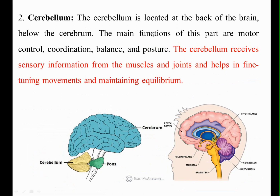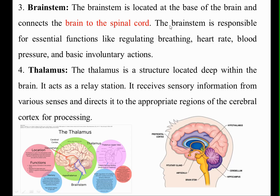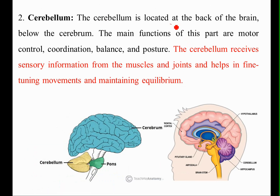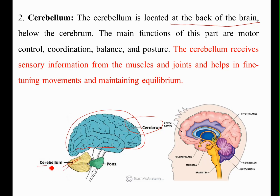The cerebellum is located at the back side of the brain, below the cerebrum. The main functions of this part are motor control, coordination, balance, and posture. The cerebellum receives sensory information from the muscles and joints and helps in fine-tuning movements and maintaining equilibrium.